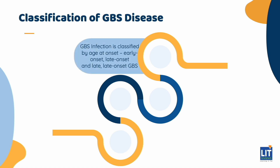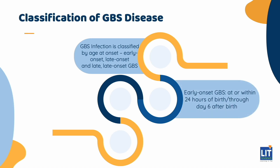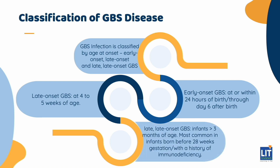Group B streptococcal infections are classified by age of onset into early-onset, late-onset, and late-late-onset GBS. Early-onset GBS generally presents at or within 24 hours of birth but can occur through day 6. Late-onset GBS typically occurs at week 4 to 5 of age. Late-late-onset GBS occurs in infants older than 3 months of age and is most common in infants born before 28 weeks of gestation or in children with a history of immunodeficiency.